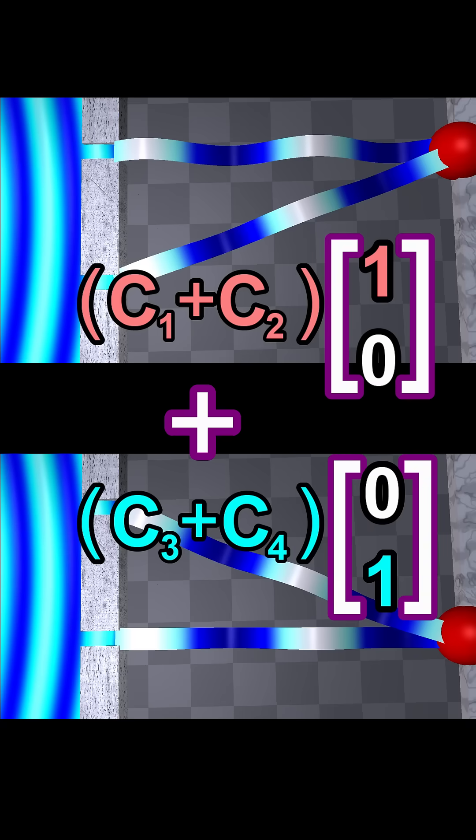Here, if one of the C variables is positive and another C variable is negative, they can cancel each other out. Let's now add a detector indicating which of the two holes the particle passed through.